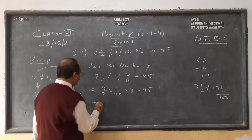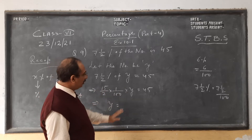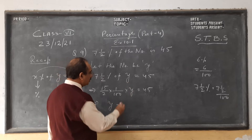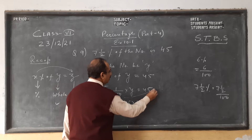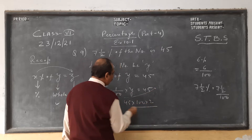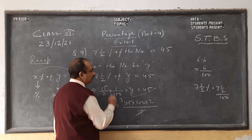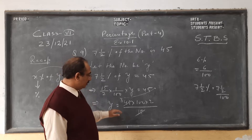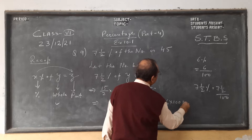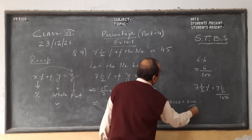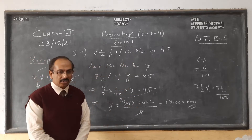We have to keep Y on one side. The denominator of the left side goes to the numerator on the right: 100 goes up, 2 goes up, and 15 comes down. We know 15 threes are 45, so 3 twos are 6, into 100, we get 600. We can verify: 7 and a half percent of 600 is 45.